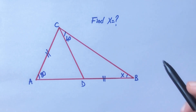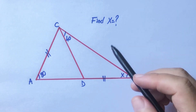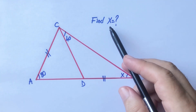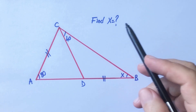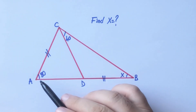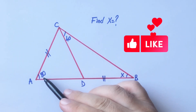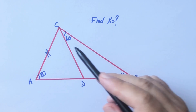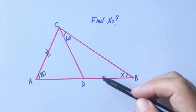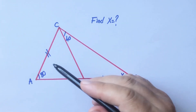In this video we will calculate the value of x using two different methods. Here is 80 degrees, here is 40 degrees, and these two sides are equal.